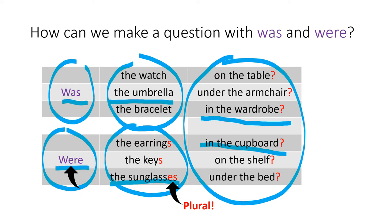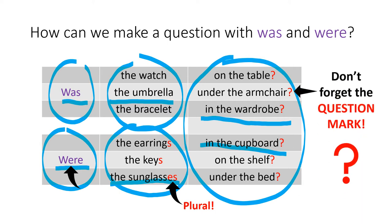And also, of course, like I always tell you, if we are asking a question, don't forget the question mark. So let's practice. The watch on the table, well, we have only one watch, so we know it has to be singular, right? It's going to be was the watch on the table. Well, good.